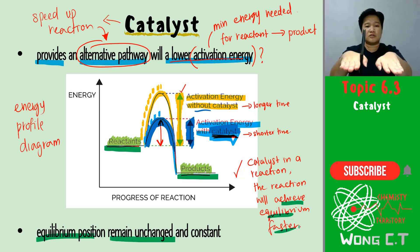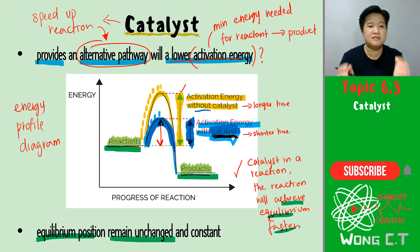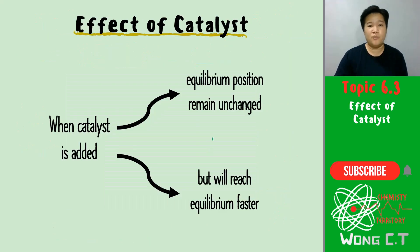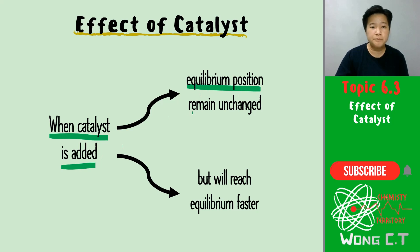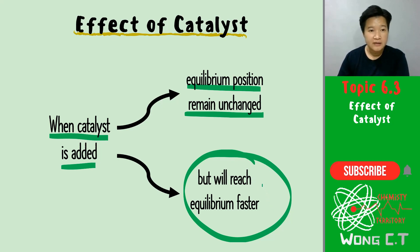The only thing is you will achieve the equilibrium much faster, but the entire equilibrium position will be the same. If the equilibrium position is at a certain point, you will reach the same equilibrium position - just much faster. That is the function of catalyst. So as a conclusion, when catalyst is added, the equilibrium position will remain unchanged, but your reaction will reach equilibrium much, much faster.